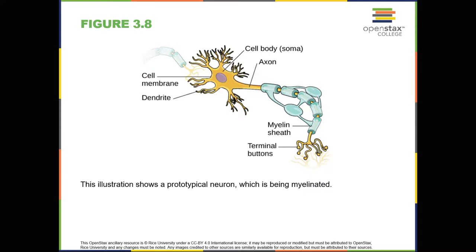The nucleus of the neuron is located in the soma, or cell body. The soma has branching extensions known as dendrites. The neuron is a small information processor, and dendrites serve as input sites where signals are received from other neurons. These signals are transmitted electrically across the soma and down a major extension known as the axon, which ends at multiple terminal buttons. The terminal buttons contain synaptic vesicles that house neurotransmitters, the chemical messengers of the nervous system.